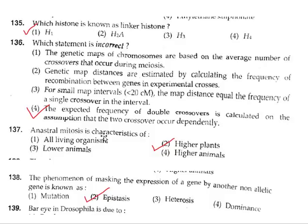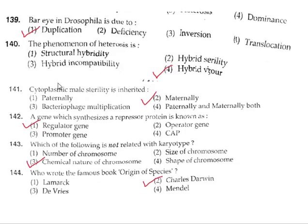Question 137: Anastral mitosis is characteristic of higher plants, where centrioles and aster rays are not present. Question 138: The phenomenon of masking of expression of a gene by another non-allelic gene is called epistasis. Question 139: Bar eye in Drosophila is due to a duplication of the 16A region. Correct answer is option 1.